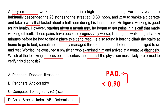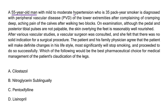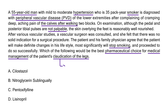Clinical vignette 3: A 55-year-old man with mild-to-moderate hypertension and a 35 pack-year smoking history is diagnosed with peripheral vascular disease of the lower extremities, complaining of deep aching calf pain during walking. Pedal and posterior tibial pulses are not palpable. The vascular surgeon finds no solid indication for surgery, and the patient agrees to stop smoking. The best pharmaceutical choice for management of his claudication is cilostazol.